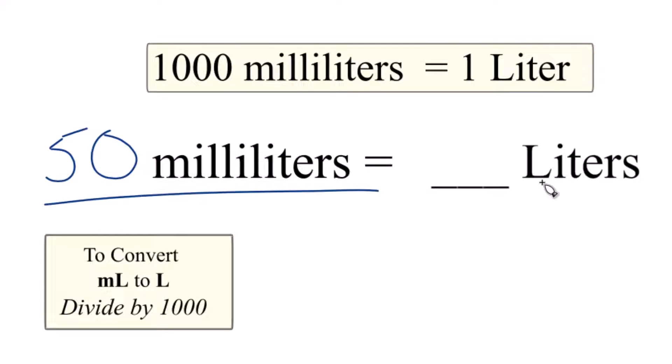Let's convert 50 milliliters to liters, and here's how we're going to do that. 1,000 milliliters, that's 1 liter.